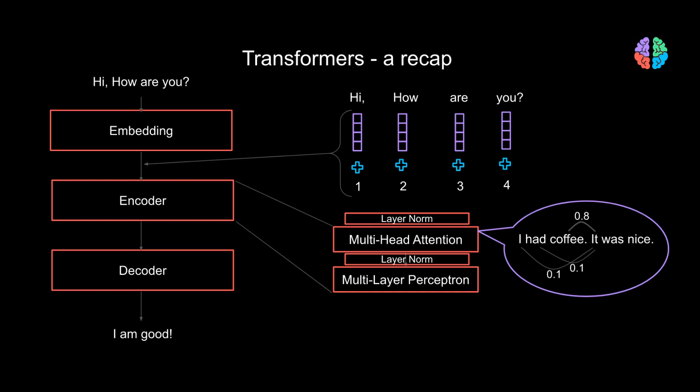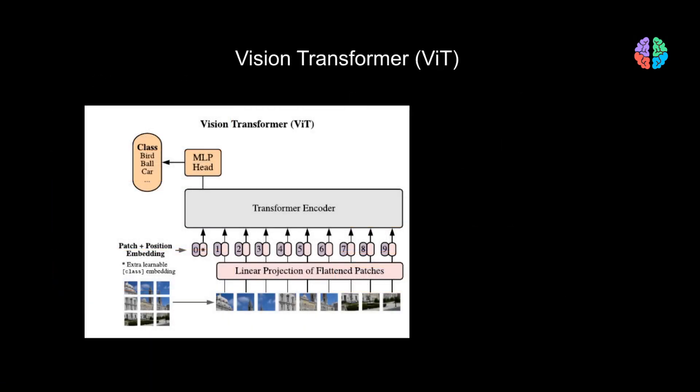With that in mind, let's have a look at the proposed Vision Transformer, or ViT. Because we are dealing with images and not words, the first step is to divide a given input image into patches. These patches are then sequentially passed through a trainable linear projection layer, which plays the role of the embedding layer. This layer outputs fixed-size vectors, and position information is then added to these vectors before being fed into the transformer.